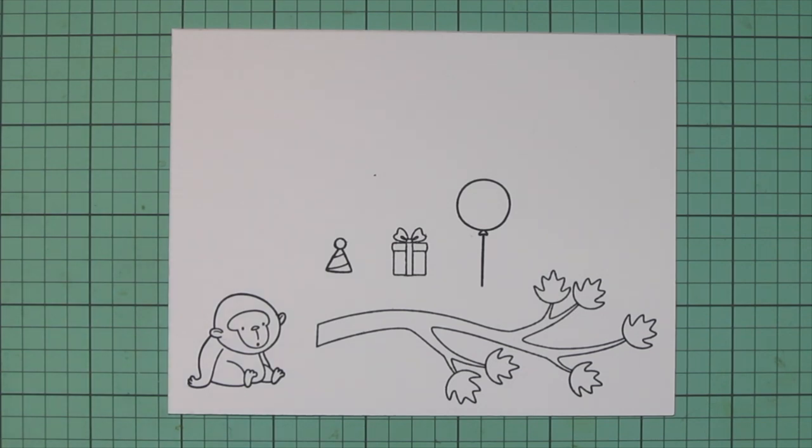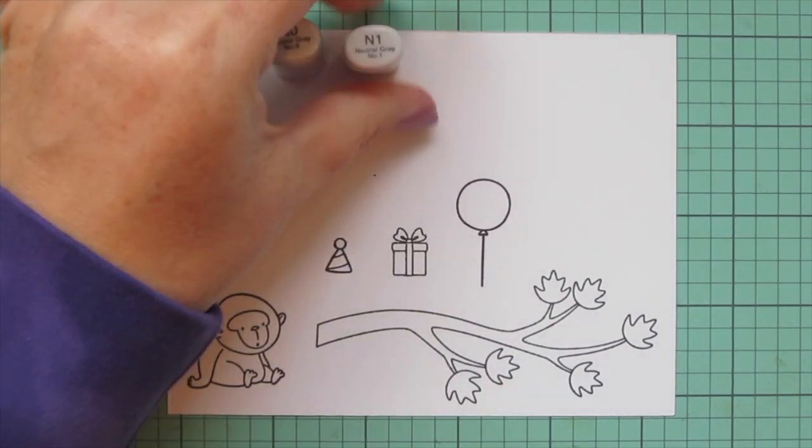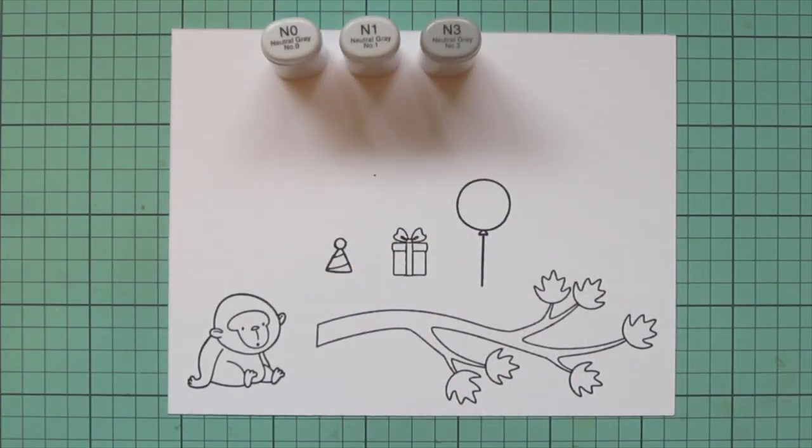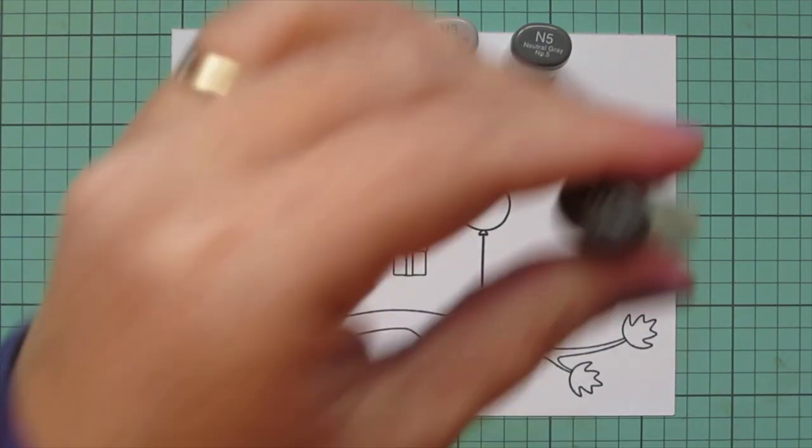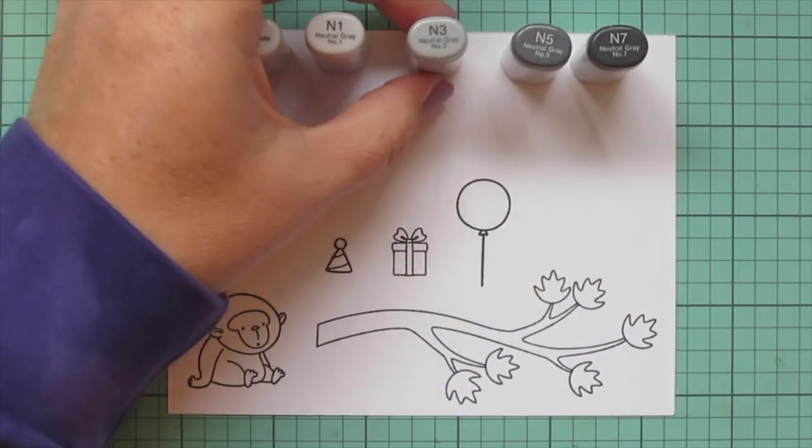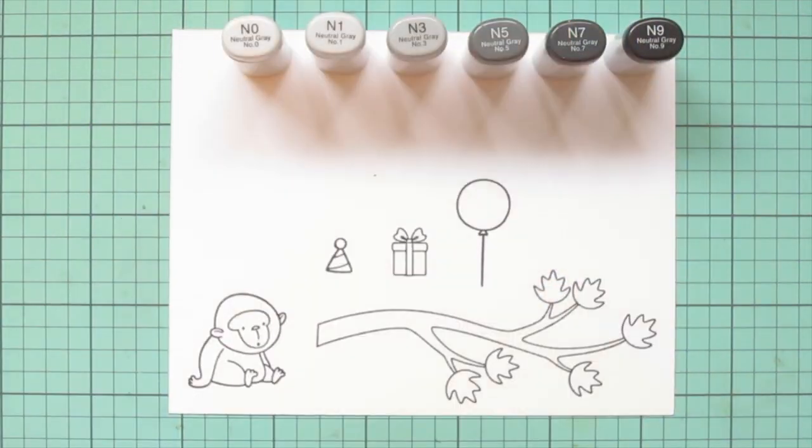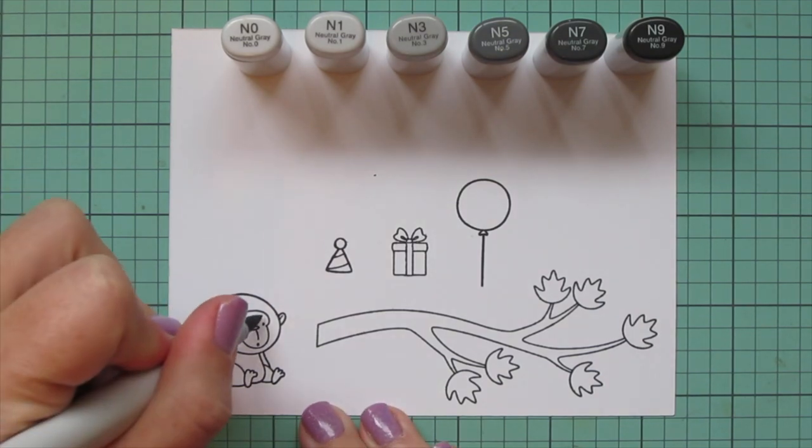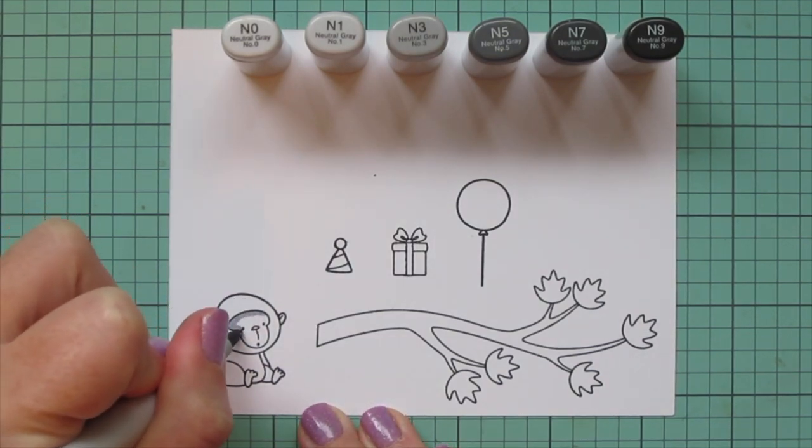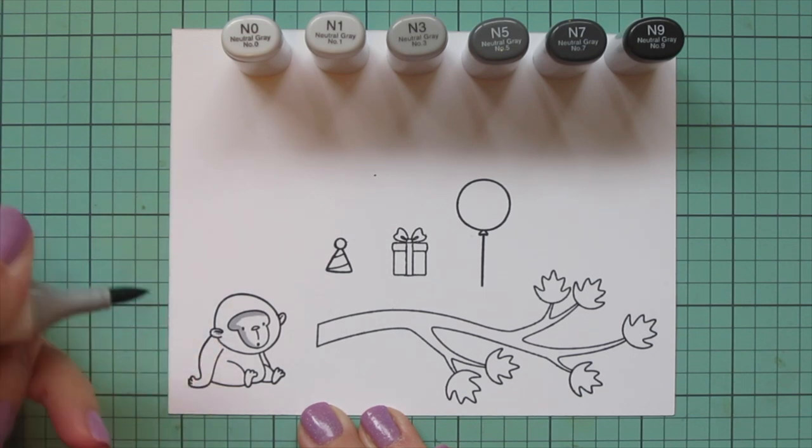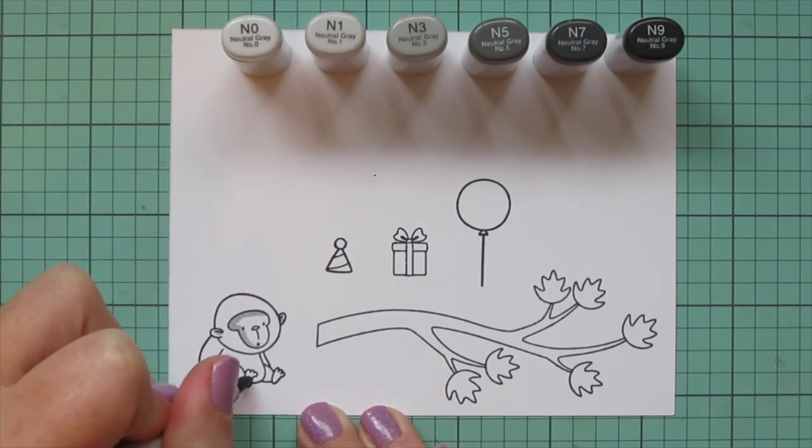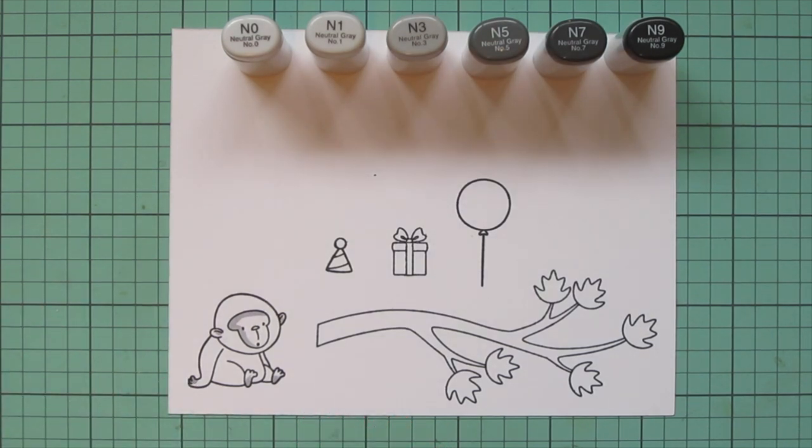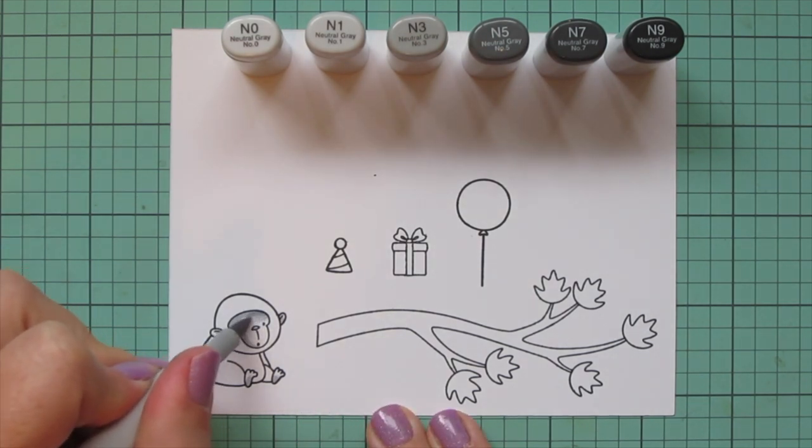So I decided for today I'm going to go with the Neutral Grays. These are the newest to me. I haven't used them a ton so I wanted to play with them and continue testing them out and see how I like them. So I'm going to use the lighter three shades for his face and his hand, his ears, his feet, and his belly. And then I'll use the darker three shades for the rest of his body.